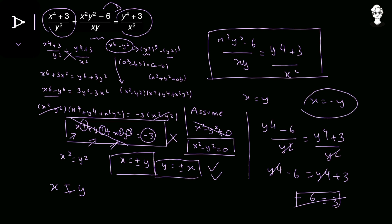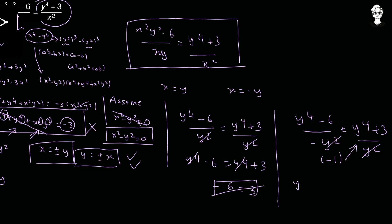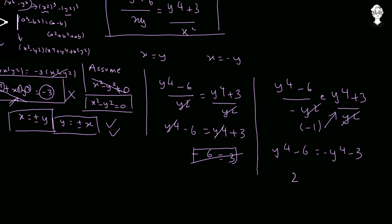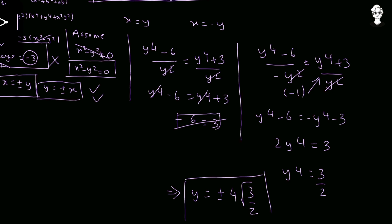Now substituting x equals negative y: y⁴ minus 6 upon negative y² equals y⁴ plus 3 upon y². After canceling y² and accounting for the negative sign, we get y⁴ minus 6 equals negative y⁴ minus 3. Adjusting terms: 2y⁴ equals 3, so y⁴ equals 3 upon 2, giving y equals plus or minus the fourth root of 3 upon 2.